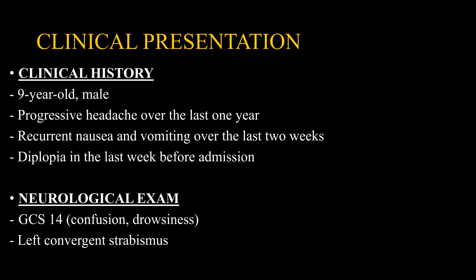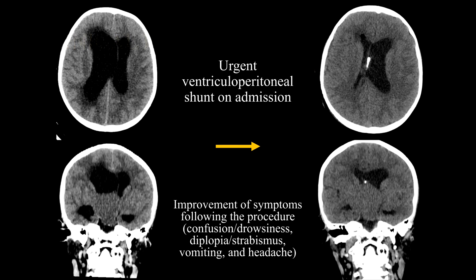The patient was a 9-year-old male presenting with a history of 1 year of progressive headache, evolving to nausea and vomiting in the last 2 weeks prior to admission, and diplopia in the previous week. Upon admission, the patient was confused and drowsy. An urgent ventriculoperitoneal shunt was performed due to obstructive hydrocephalus caused by an intracranial mass first identified on the initial CT scan, and the patient showed improvement of symptoms following this procedure.